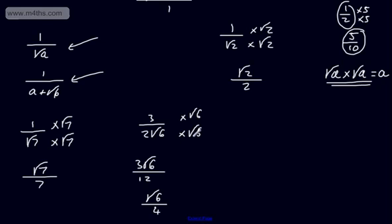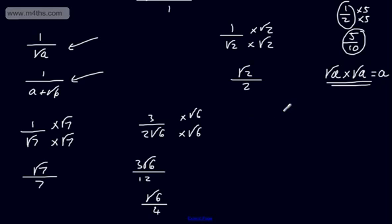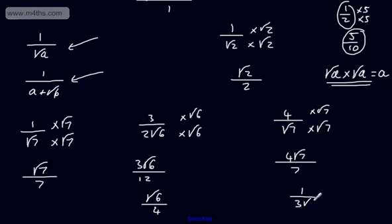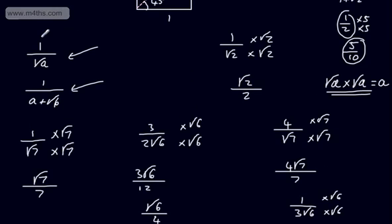All we've done is multiply the top and bottom of the fraction. Let's try 4 over root 7: multiplying top and bottom by root 7 gives us 4 root 7 in the numerator and 7 in the denominator. If we have 1 over 3 root 6, we multiply top and bottom by root 6, ending up with root 6 over 3 times 6, which gives root 6 over 18. That is how to rationalize the denominator when we have the form 1 over root A, or some variation — essentially where there's no addition or subtraction sign in the denominator.